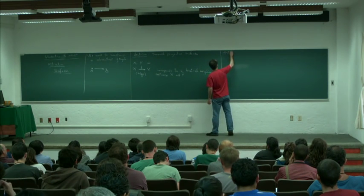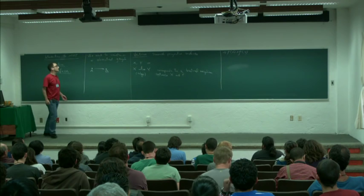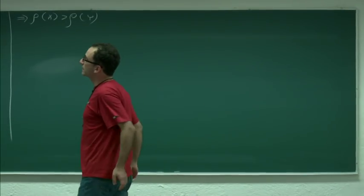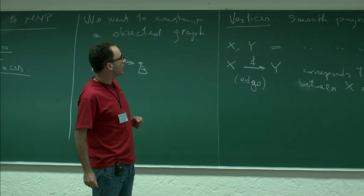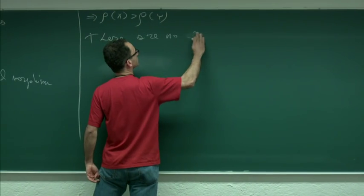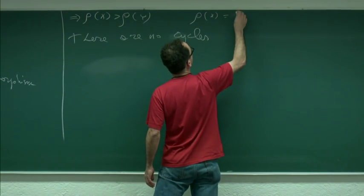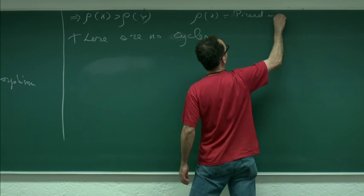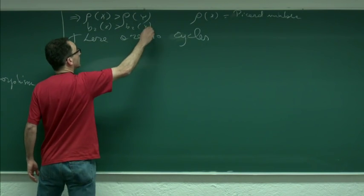Because we always contract something if it's not trivial, we are getting rid of some curves; everything is smooth, so there are no problems in terms of Cartier divisors. Now the question is: how do we study this big graph? One property that follows immediately is that there are no cycles. Rho of X is the Picard number — the dimension of the Picard group of X. You can also say that B2 of X is always greater than B2 of Y.